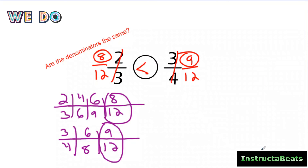This one was a little different because you had to do your pattern math for both fractions. But again, a lot quicker and neater than trying to draw out area models and number lines — although that's a great strategy. This is a little bit quicker, and it's going to help you when you get to adding and subtracting fractions with unlike denominators.